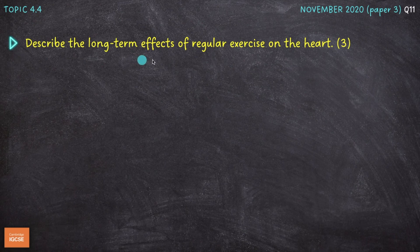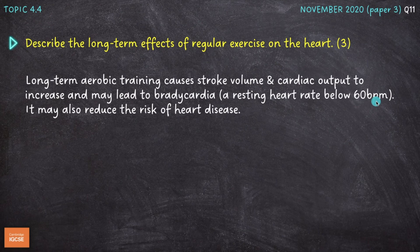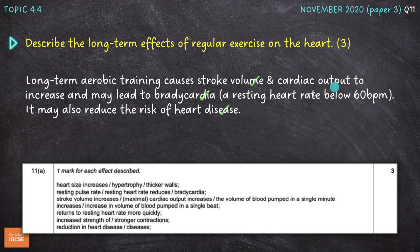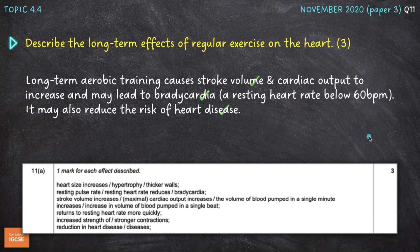The next question is to describe the long-term effects of regular exercise on the heart for three marks — the second time we've had this question in this video. Long-term aerobic training causes stroke volume and cardiac output to increase, may lead to bradycardia or a resting heart rate below 60 beats per minute, and may also reduce the risk of heart disease. The mark scheme is exactly the same as we looked at before, so pause the video if you need to review it.